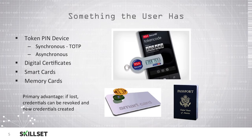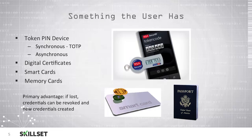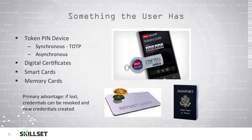Something the user has is typically a physical device that the user is holding that they use to authenticate themselves into a system. This could be a token pin device which is designed to provide the user with a one-time pin they can use to log into the system. There are two types of token pin devices. The first is synchronous or time-based one-time password devices. These devices are based on a specific time, and the server knows the pin that will be displayed on the device at that time. Users can simply look at the pin number on the screen of their device and enter that into the system to log on.